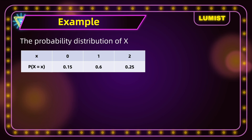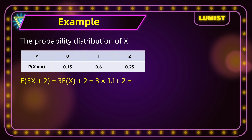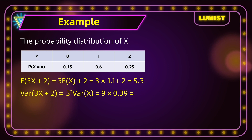Now let's apply these new properties to our distribution. First, E[3x + 2] = 3·E[x] + 2 = 3 × 1.1 + 2 = 5.3. And Var(3x + 2) = 3²·Var(x) = 9 × 0.39 = 3.51. These methods make finding expectation and variance a lot easier.